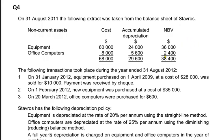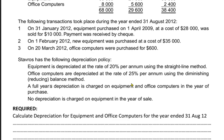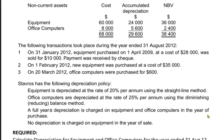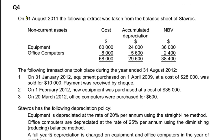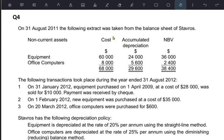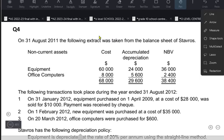In a full year policy, we do not charge any depreciation in the year in which we have sold the asset. The requirement is to calculate depreciation for equipment and office computers for the year ending 31st August 2012. The year is ending on 31st August 2012, and the 31st August 2011 data is given, so that is the previous year. The balances at the end of the previous year become the opening balance for the current year.